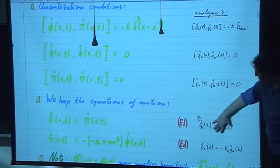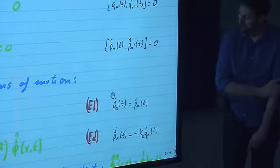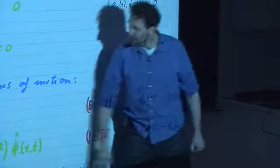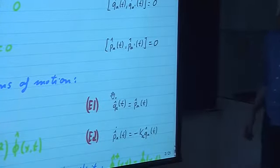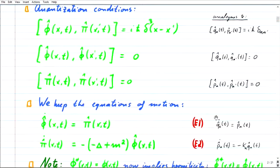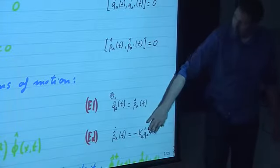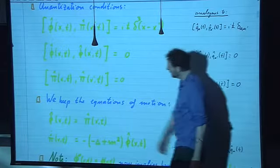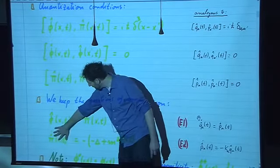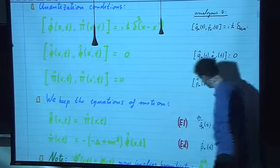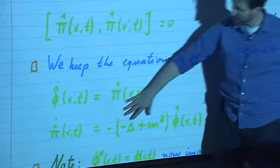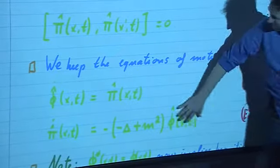This is very much analogous to equations of motion in first quantization for a harmonic oscillator — namely, q dot is p for every degree of freedom A. The second part of the Klein-Gordon equation has an analog in first quantization: p dot equals minus k times q. Here we have phi double dot equal to something times phi.